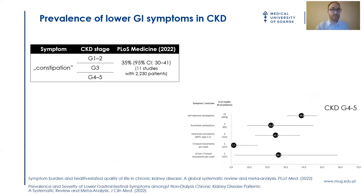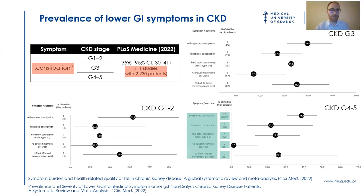What I love the most is dividing general outcomes into more specific ones, such as constipation into low frequency of bowel movements, hard stool consistency, or self-reported symptom. It is important because each of them can have other causes and also other health implications. As you can see, we were able to collect enough data to provide an estimated prevalence for many specific outcomes. In the case of constipation, we included half more patients than the previous systematic reviews.